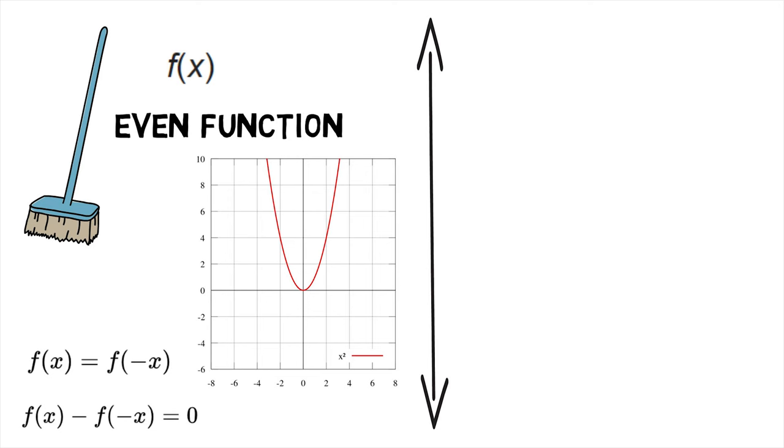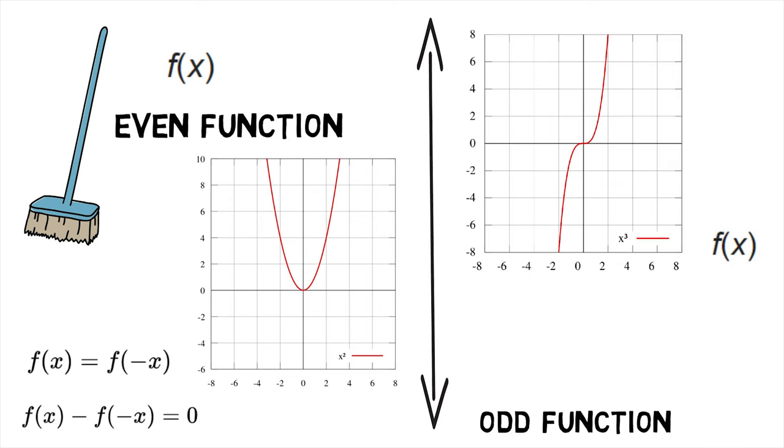On the other hand, a function f is odd if the graph of f is symmetric with respect to the origin. Algebraically, f is odd if and only if f of minus x equals minus f of x for all x in the domain of f. It is also represented as f of x plus f of minus x equals 0.